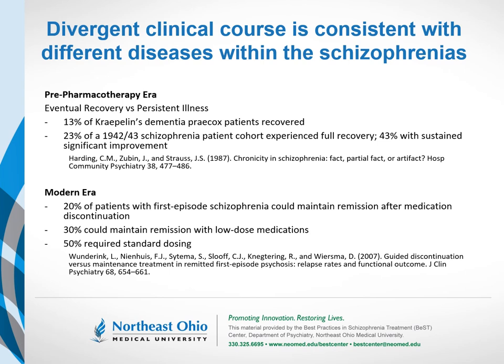Similar divergent clinical courses have been found in the modern post-pharmacology era. More recently, in first episode psychosis patients, it has been discovered that about 20% of individuals after stabilization from a first episode of schizophrenia are able to maintain long-term remission without any antipsychotic medications. About 30% of that cohort requires some antipsychotic medications, but at significantly lower doses, while the remaining group required higher doses of conventional antipsychotic medications and/or clozapine. Clinical course thus tells us that there could be several different illnesses at play under the schizophrenia diagnosis.